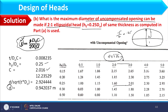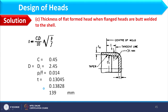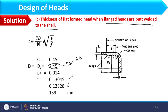Part C is a flat formed head where C = 0.45 and D = Di = D0 − 2·Ts = 2.5 − 2(0.025) = 2.45 m. Computing T gives 130.45 mm, and adding 6% for the formed section yields a final thickness of 139 mm.